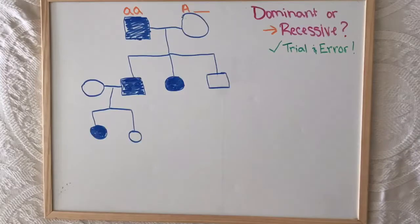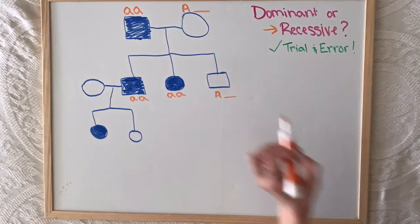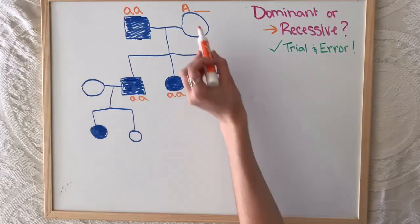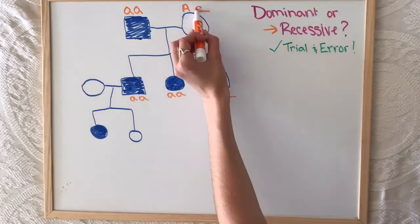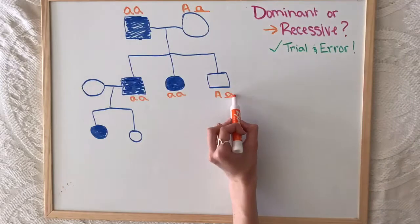And of course, the individual who expresses the trait is homozygous recessive. And let's fill in everyone else we can. Of course, those two children had to get their second little a from somewhere. So it's from their mom. And that also tells you that their brother who is not affected has to be heterozygous as well.